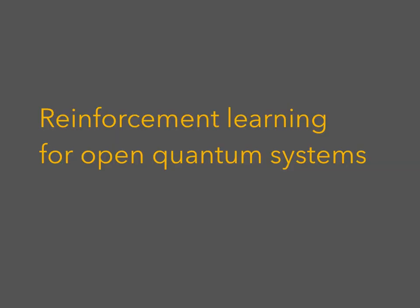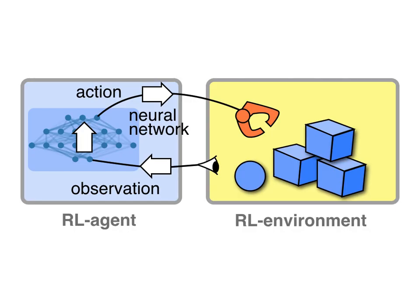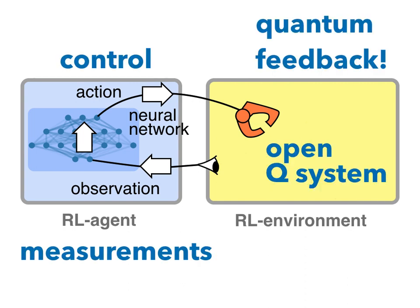How can we apply this to open quantum systems? You take your reinforcement learning setup, but the environment is now replaced by an open quantum system. Making observations means making quantum mechanical measurements. You feed them into a neural network representing your policy, and use them to decide on the next control to apply to the open quantum system. What we are facing here is really a situation with quantum feedback, and reinforcement learning is about figuring out a very good quantum feedback strategy to obtain some goal.